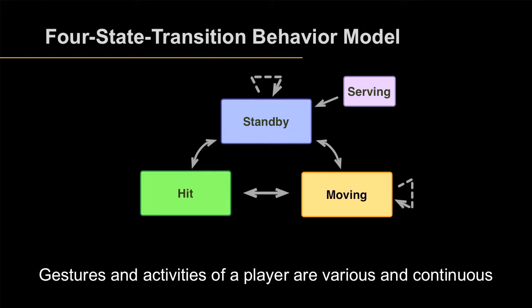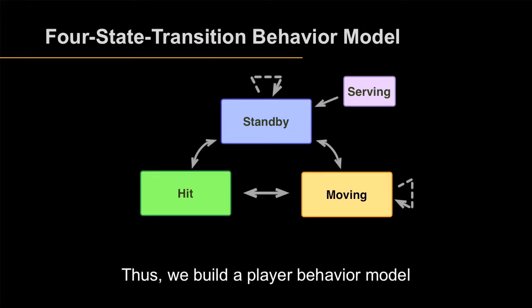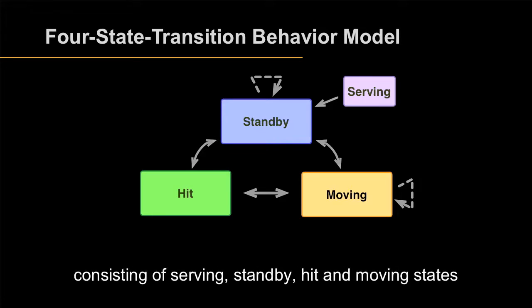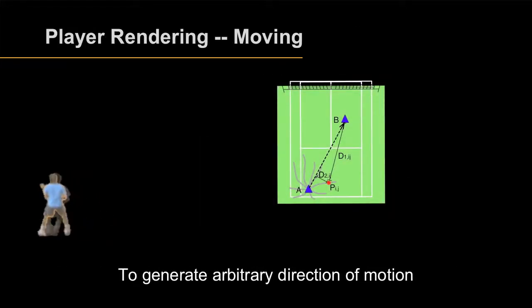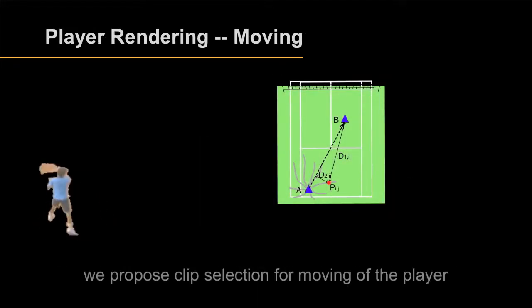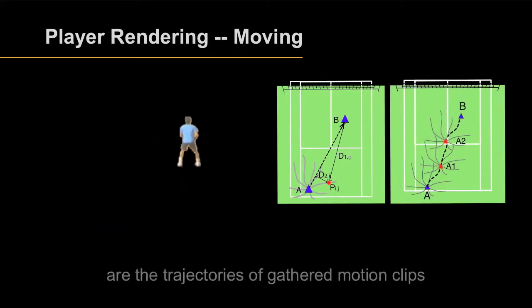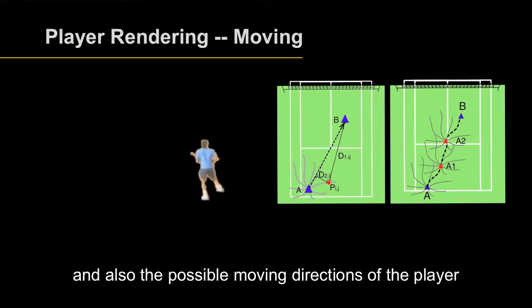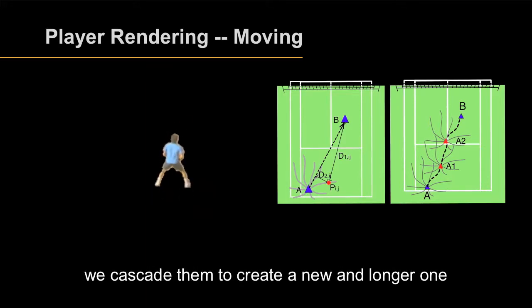Gestures and activities of the player are various and continuous. It is hard to render a vivid player without a model. Thus, we build a player behavior model consisting of serving, standby, hit, and moving states. Arrows stand for allowable state transitions, and all actions of a player can be composed by these states. To generate arbitrary direction of motion, we propose clip selection for moving of the player. As the figure shows, grid curves around point A are the trajectories of gathered motion clips and also the possible moving directions of the player. After selecting several smaller clips, we cascade them to create a new and longer one.